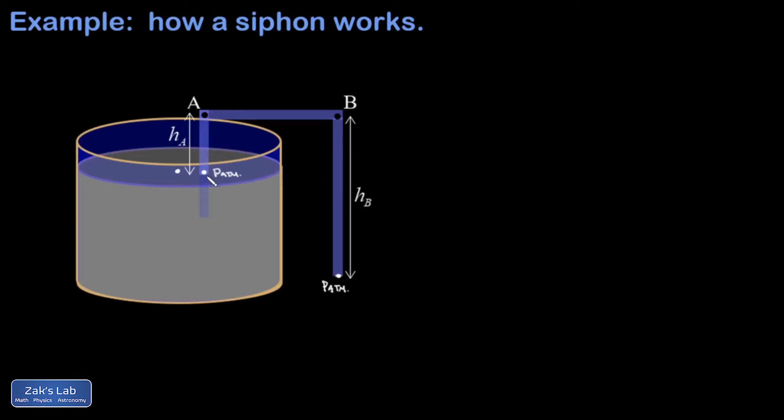So if I look at the left hand side, I'm going to take the lowest point, that's P atmospheric, and say that that's equal to the pressure above it at PA plus rho g hA, the increase in depth in the fluid. And this means that PA is atmospheric pressure minus rho g hA.